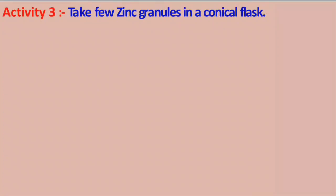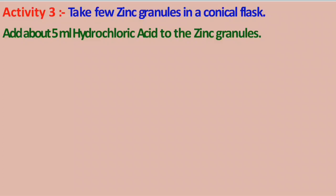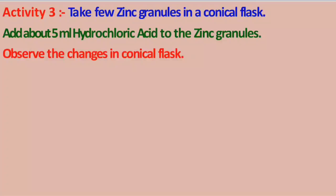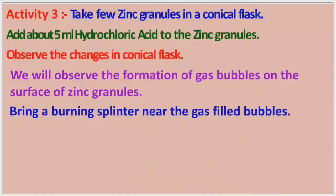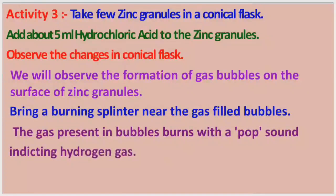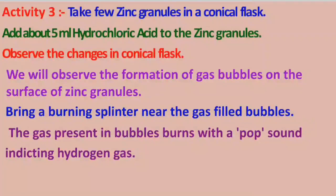Activity 3: Take a few zinc granules in a conical flask and add about 5 ml of hydrochloric acid. Observe the changes — gas bubbles will form on the surface of the zinc granules. Bring a burning splinter near the gas-filled bubbles. It will produce a pop sound, indicating hydrogen gas.